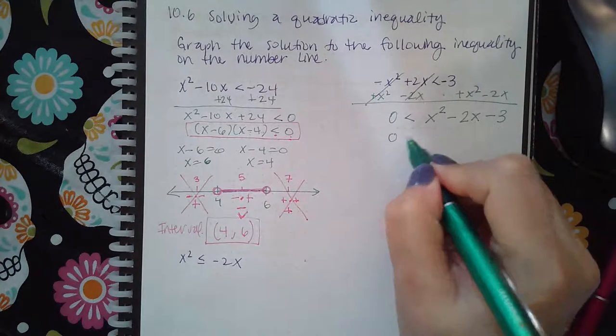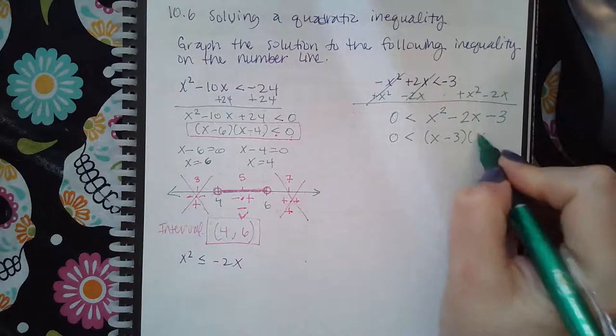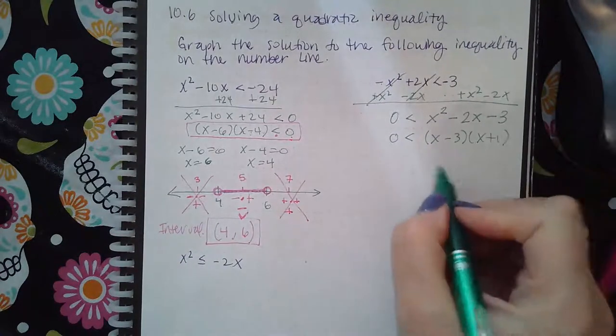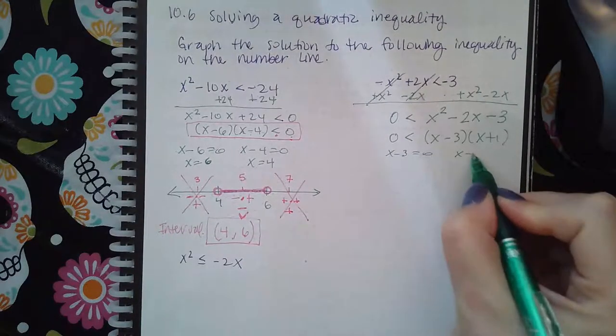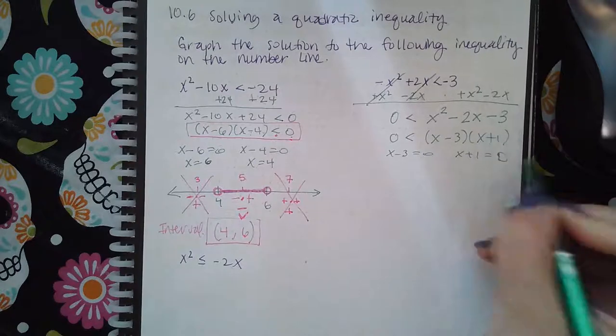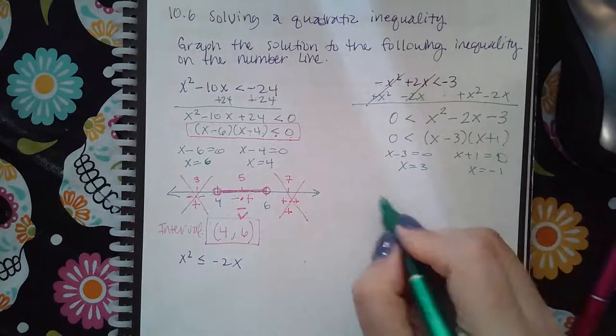So then I'm going to have x minus 3 and x plus 1. And so then I'm going to have x minus 3 equal to zero, x plus 1 equal to zero. So x equals 3 and x equals negative 1.